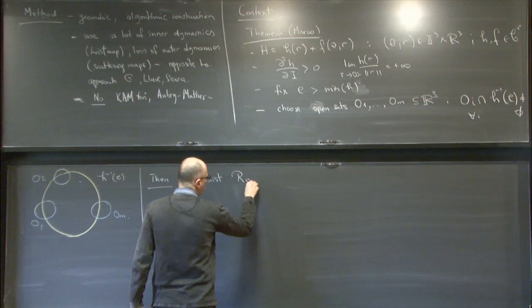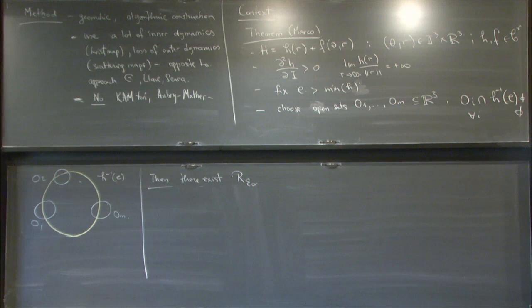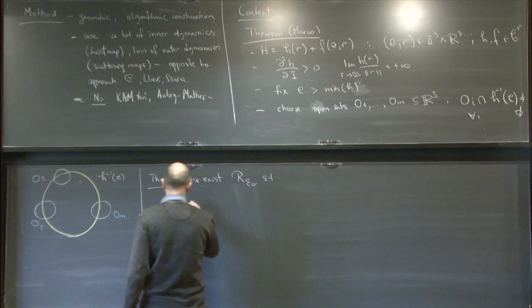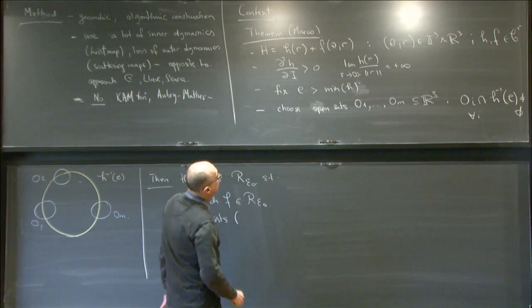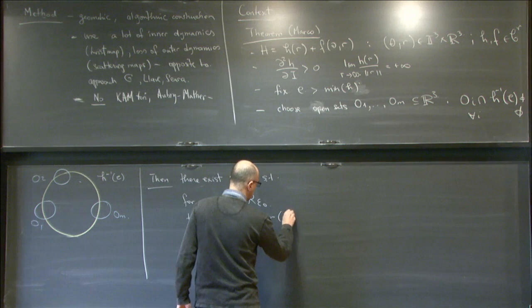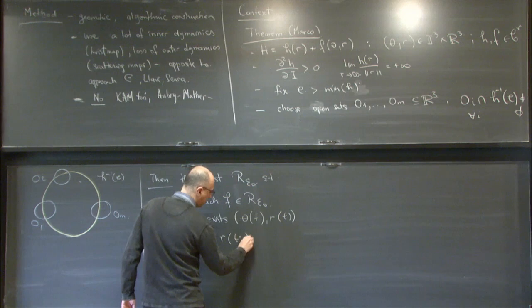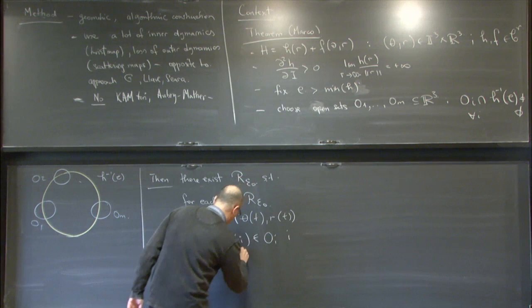There exists a set of perturbations R_{ε_0} such that for each F in R_{ε_0}, there exists a trajectory θ(t), R(t) such that R(t_i) is in O_i. So there is a trajectory for the perturbed system in the energy manifold H^{-1}(E) such that these trajectories go from one place to another in the prescribed order. This is a finite sequence of times, as we want to reach a finite sequence of targets.